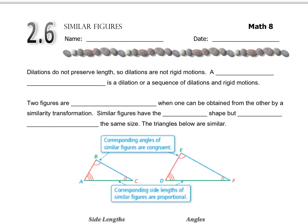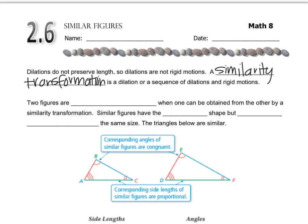So we have these things called similarity transformations, and similarity transformations are sequences that involve a dilation. So then we have this thing called being similar, and that's when one figure can be obtained from the other by some sort of similarity transformation, so there's some sort of dilation involved.